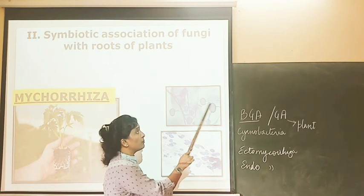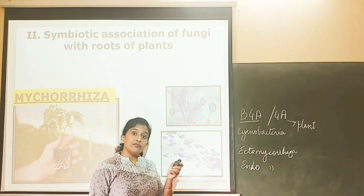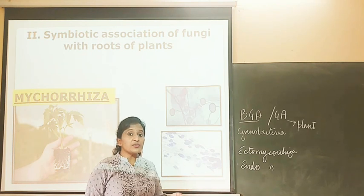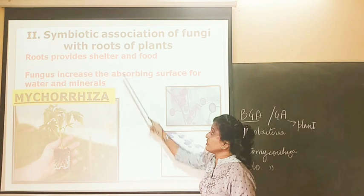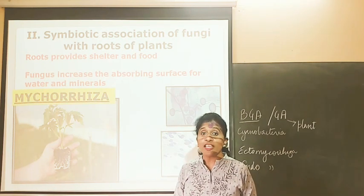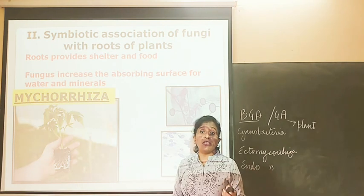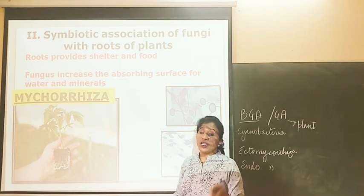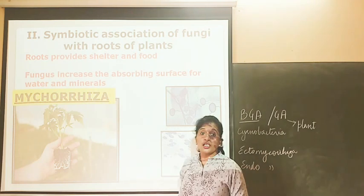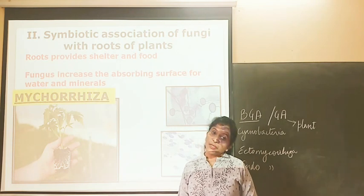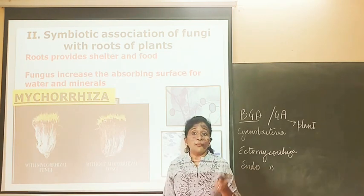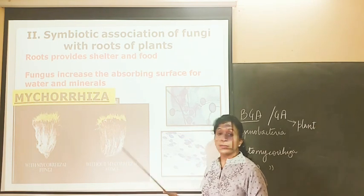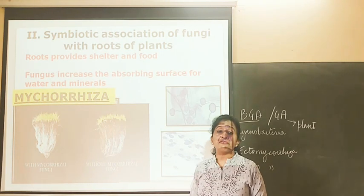The blue coloured structures observed are the fungal association with the cortex of these higher plant roots, stained and observed under the microscope. Roots here provide shelter and absorb organic substances from the soil, providing food in the form of sugars to the fungus. Whereas fungus increases the absorbing surface area for the roots to absorb water as well as minerals. Plants associated with mycorrhiza will grow better than plants without such fungal association.